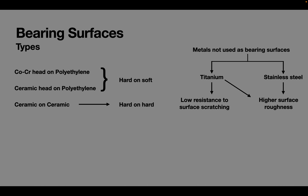Although titanium is one of the preferred metals for cup and stem manufacturing, it is not used in making femoral heads. Currently used ceramic is the fourth generation alumina zirconia composite, also called zirconia toughened alumina.